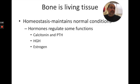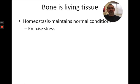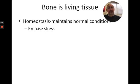Homeostasis means maintaining internal conditions, and since bone is living — it grows, has metabolism, and all the other traits of life — bone cells maintain homeostasis, sometimes regulated by hormones. Calcitonin deposits calcium into bone. Parathyroid hormone helps remove calcium from bone. Human growth hormone helps bones grow longer. And estrogen stimulates osteoblasts to build more bone. Bone also adjusts to stress: the more exercise, especially weight-bearing exercise, the stronger and thicker your bones become. So to help avoid osteoporosis, weight-bearing exercise can be significant.